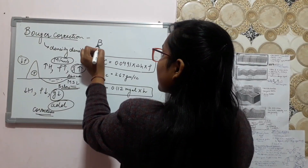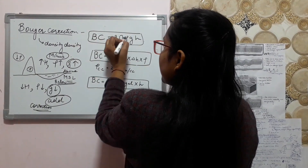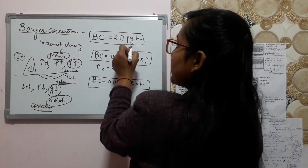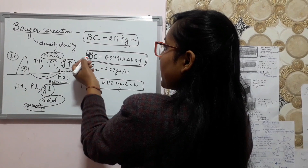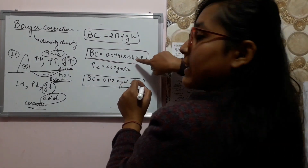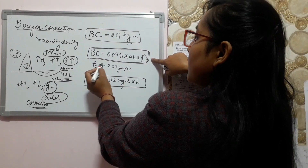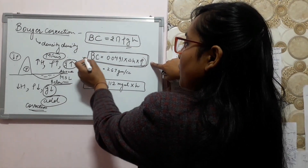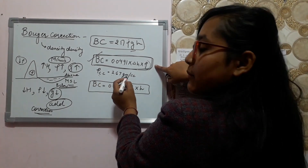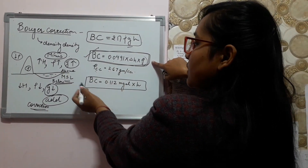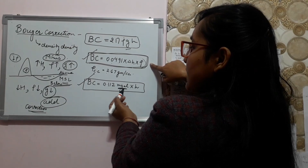The formula for Bouguer correction is 2π × rho × g × h, where rho is the density, g is the gravitational constant, and h is the elevation. You may also see it written as: Bouguer correction = 0.0491 × delta h × rho, where delta h is the elevation and rho is the density contrast. You can also rewrite this formula by multiplying by the density of continental crust, which is 2.67 g/cc, to get: Bouguer correction = 0.112 milligals × h.